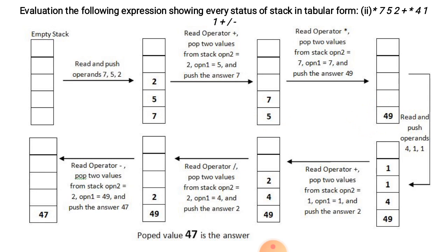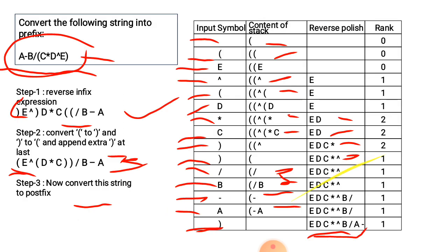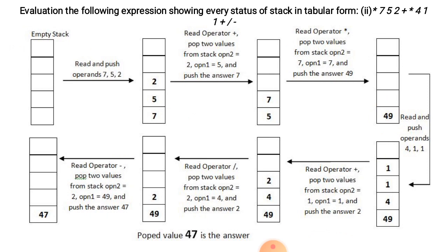We pop two values from the stack — both are 7, so 7 into 7 is equal to 49. Then operands 4, 1, 1 are added to the stack with 49 remaining. Next operator is plus — addition is performed between the top two operands: operand 1 is 1 and operand 2 is 1, giving 2. 4 and 49 remain.